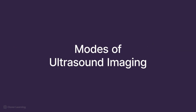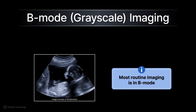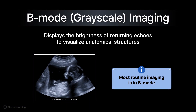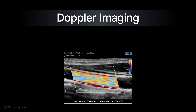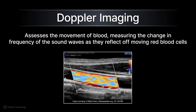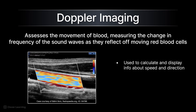There are also different modes of ultrasound imaging. Most routine imaging is grayscale or B-mode, which displays the brightness of returning echoes to visualize anatomical structures. In contrast, Doppler ultrasound assesses motion, specifically the movement of blood. It measures the change in frequency of the sound waves as they reflect off moving blood cells. This frequency shift is used to calculate and display information about the speed and direction of blood flow, often using color overlays or spectral waveforms.